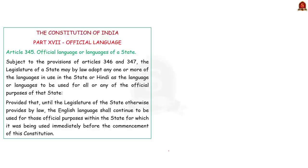Article 345 deals with the official language or languages of a state. It empowers the state legislature to adopt any one or more languages for use in the state, and to adopt Hindi or any other language as the language for official purposes of the concerned state.